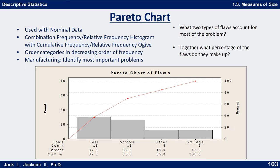Generally a Pareto chart also has an ogive with it. In a Pareto chart, the order is just the order of decreasing frequency. The ogive starts at zero percent. Once we get to peel, we're at 15, which is 37.5% of the total. When you get to scratch, the height is the same as stacking that bar on top of peel, giving us 70%. Then smudge and other bring us to 85% and then 100%. The ogive goes from zero to 100%.